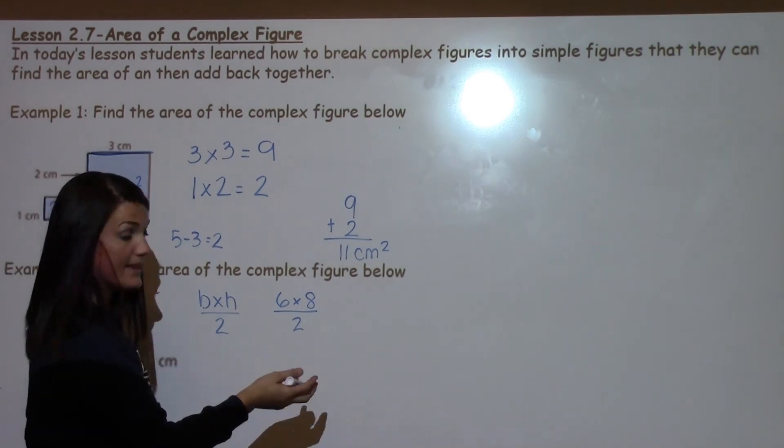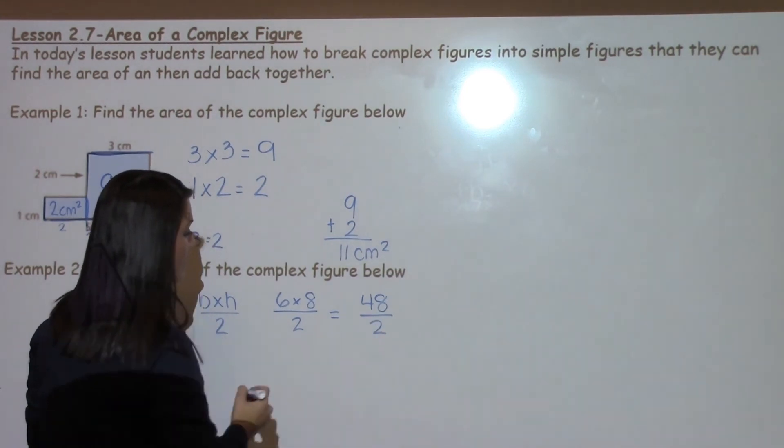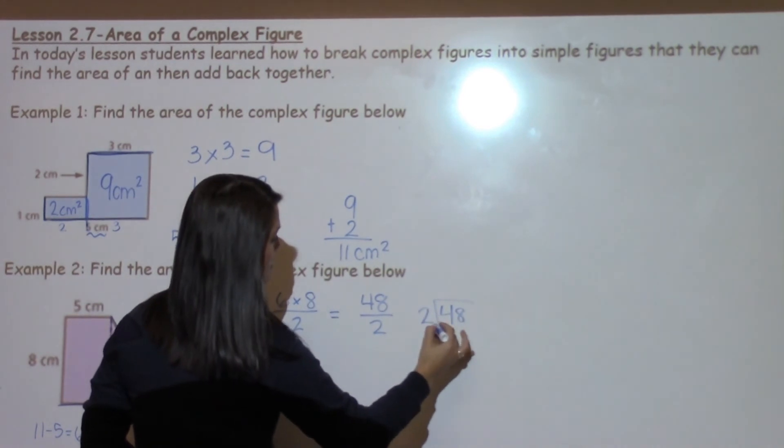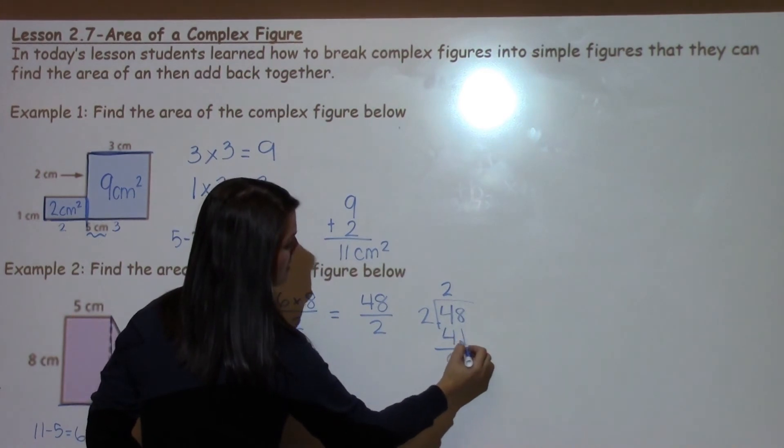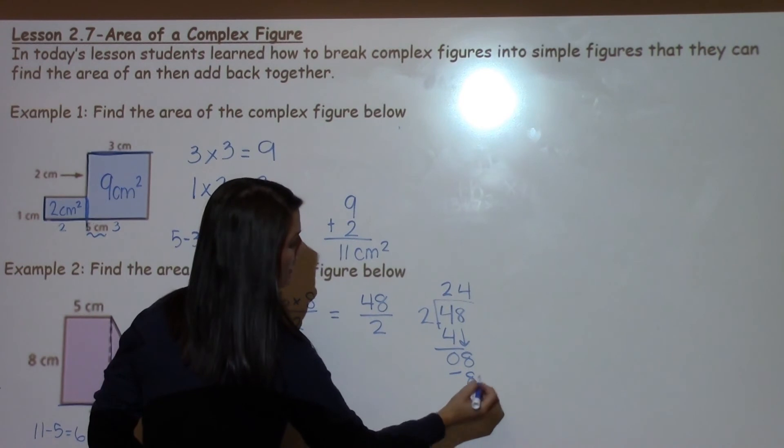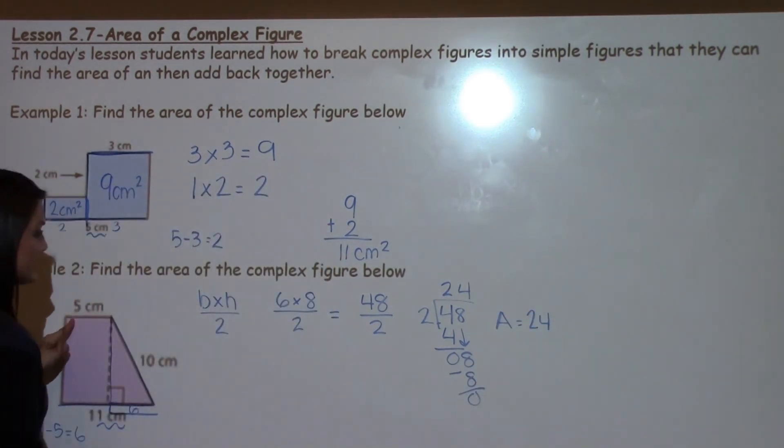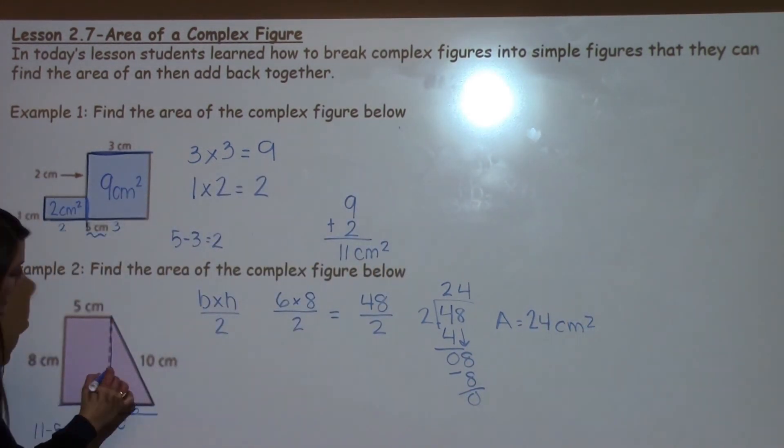Now I have the numbers I need to find the area of the triangle. 6 times 8 is 48, it's one of my favorite facts because it rhymes, and then I just divide by 2. 2 goes into 4, 2 times, 2 goes into 8, 4 times and I do not have a remainder so my final answer is 24. I'm working in centimeters again and I have squared units.